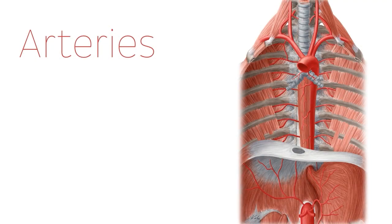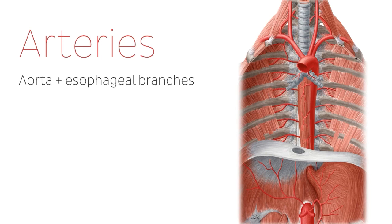The first structures we're going to be covering in this tutorial are the arteries of the esophagus. There are a few structures here that are directly what we know as the arterial blood supply of the esophagus — the structures that will actually be supplying it. But there are also a lot of arteries found nearby. We're going to start with the main one: the aorta and the esophageal branches, which will be supplying the esophagus.